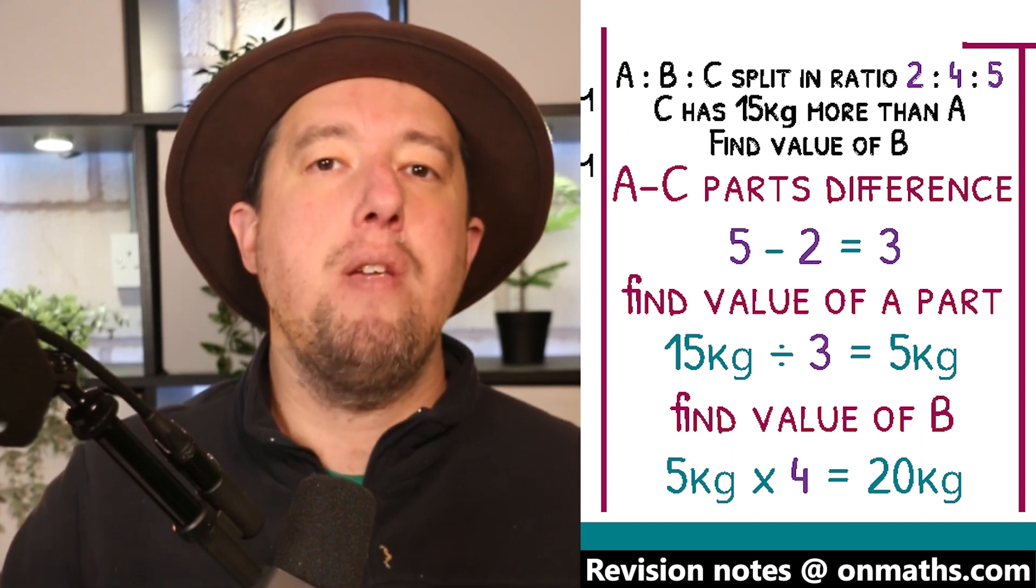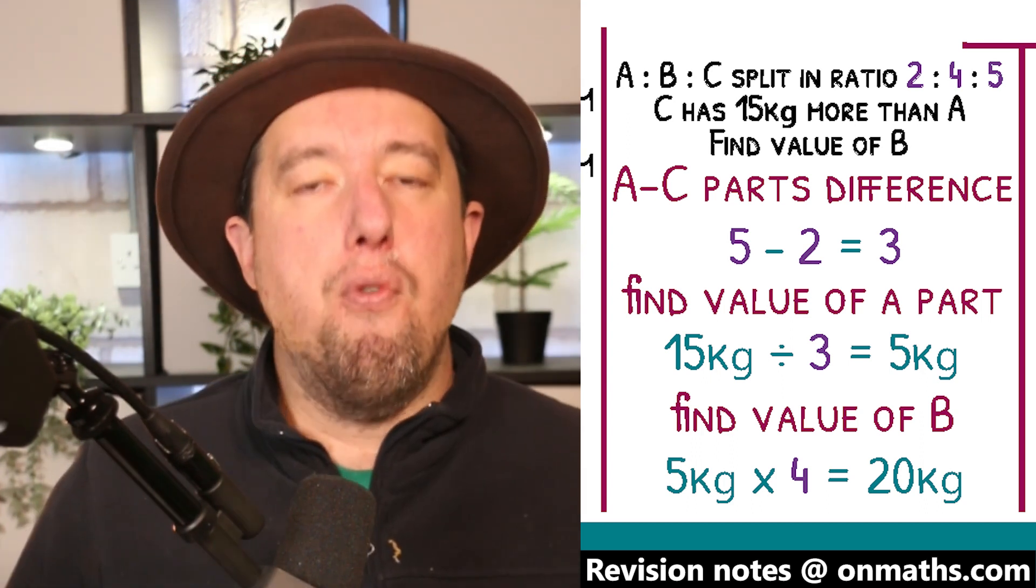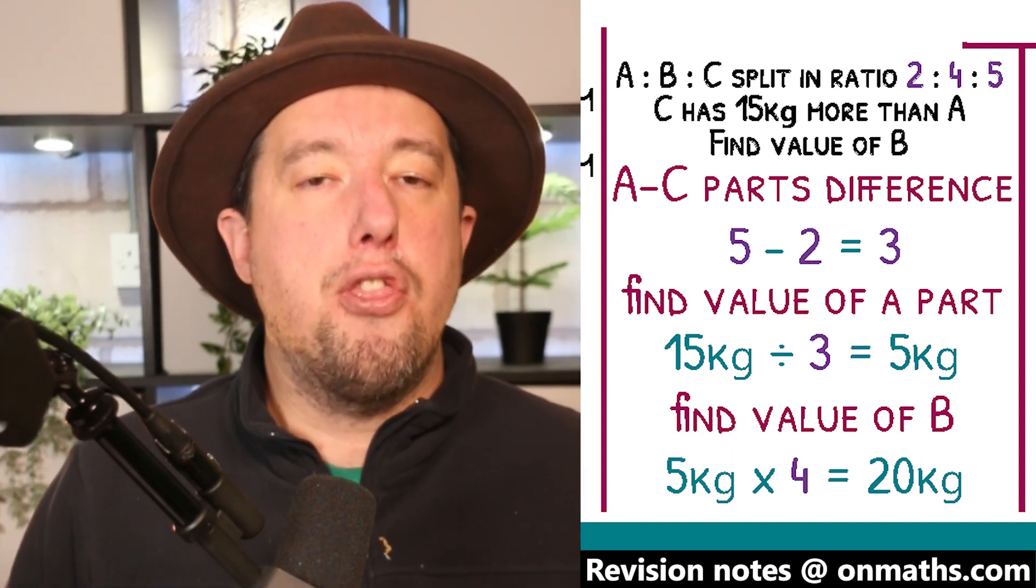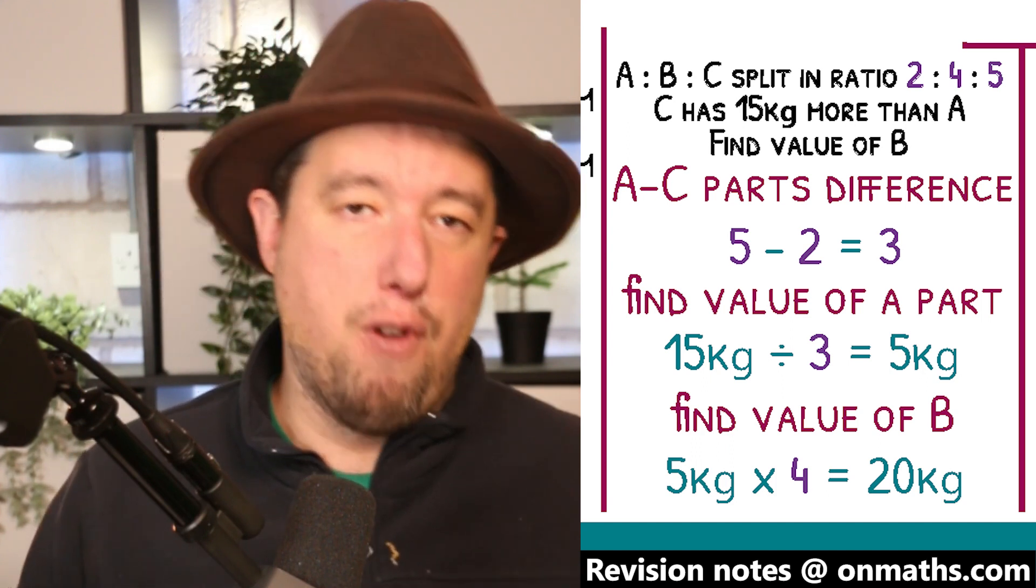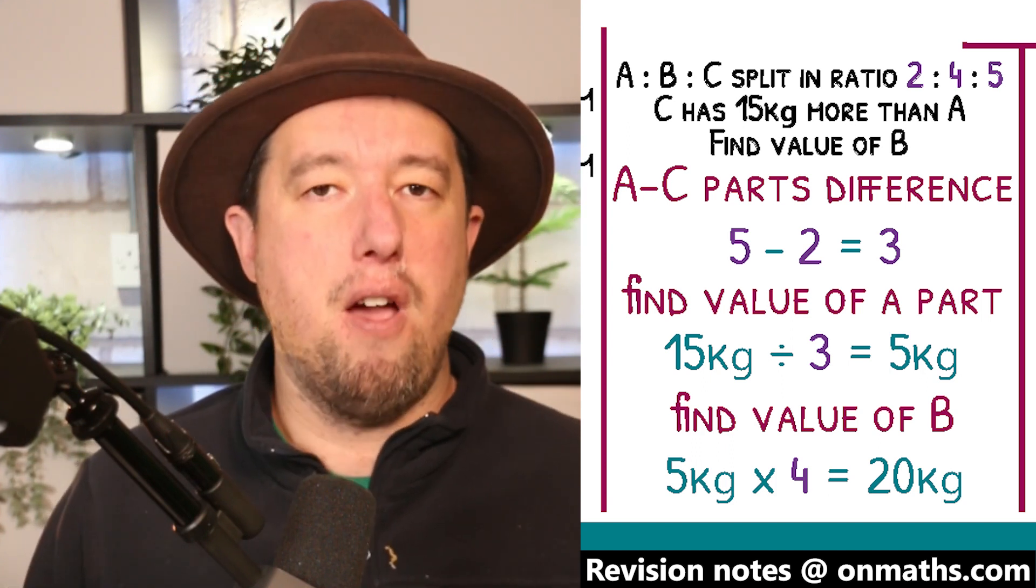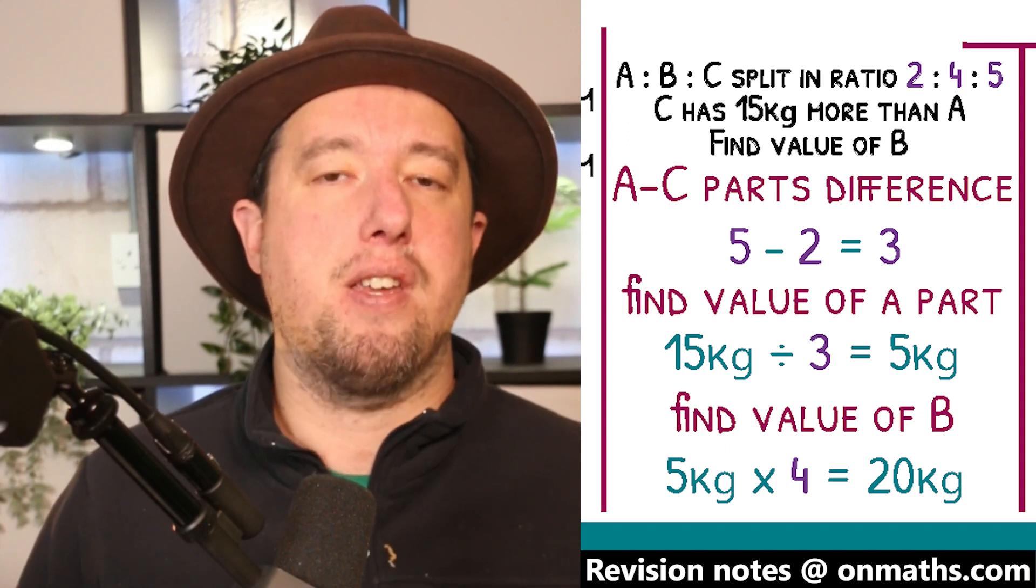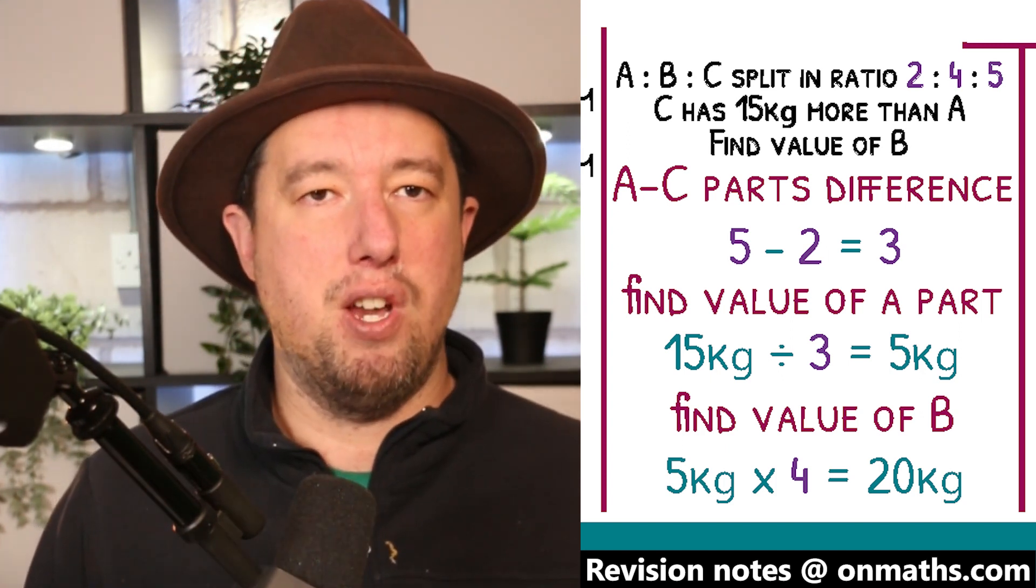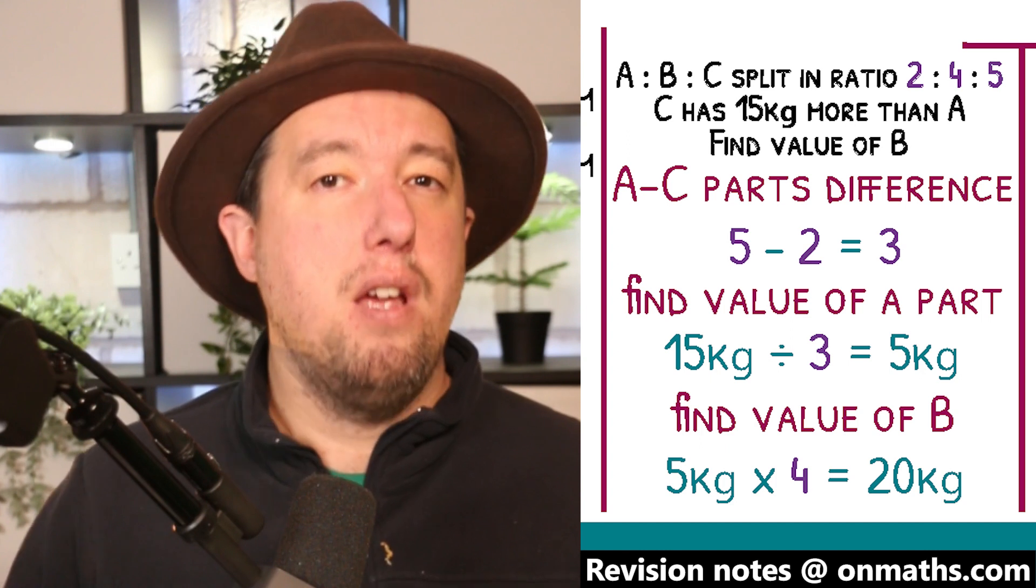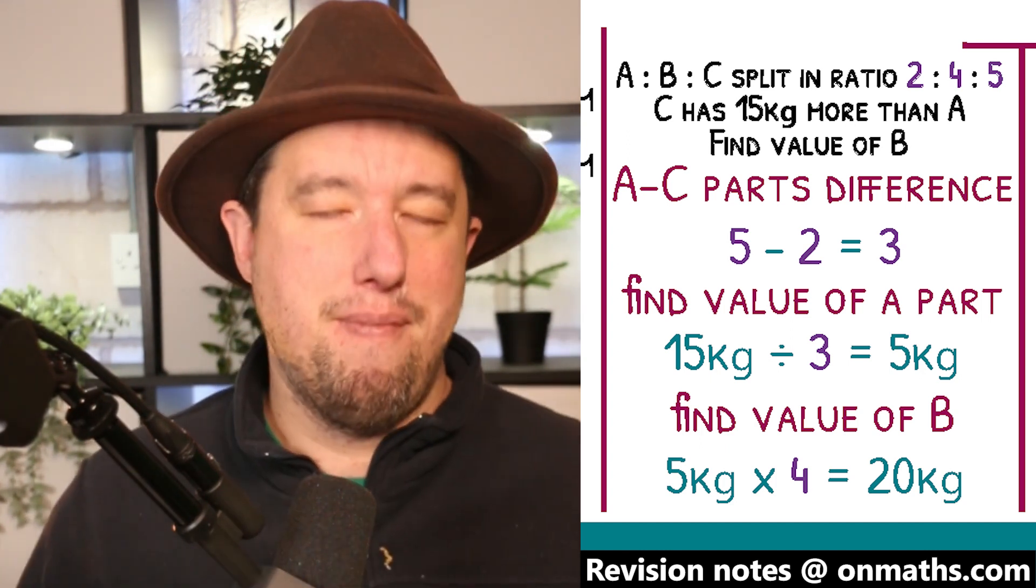and C has 3 more boxes than A, or 3 more parts than A. So the 3 boxes contain 15 kilograms. 15 divided by 3 is 5 kilograms, meaning each box contains 5 kilograms of cheese. B has 4 parts, so 4 times 5 kilograms is 20 kilograms.